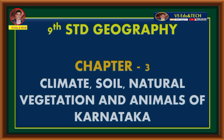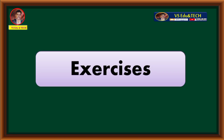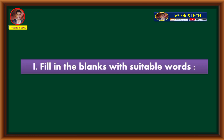9th standard geography, chapter 3: climate, soil, natural vegetation and animals of Karnataka. Exercises, first main — fill in the blanks with suitable words.